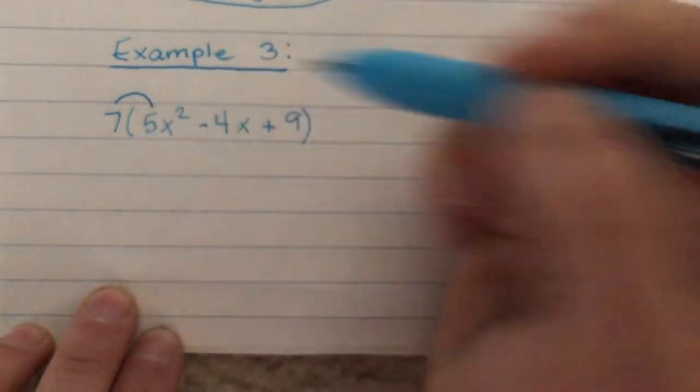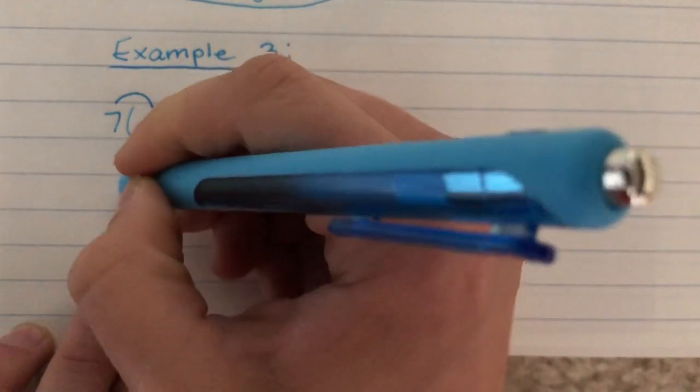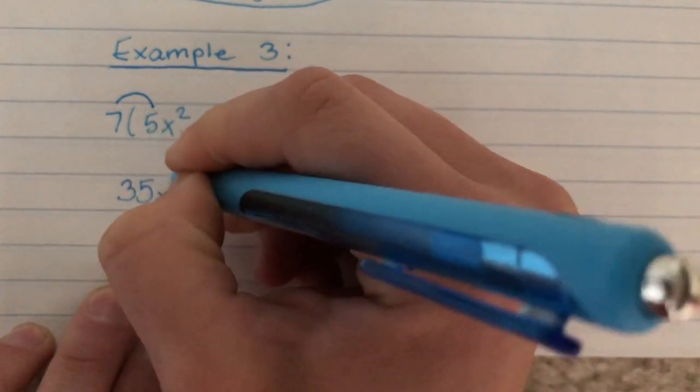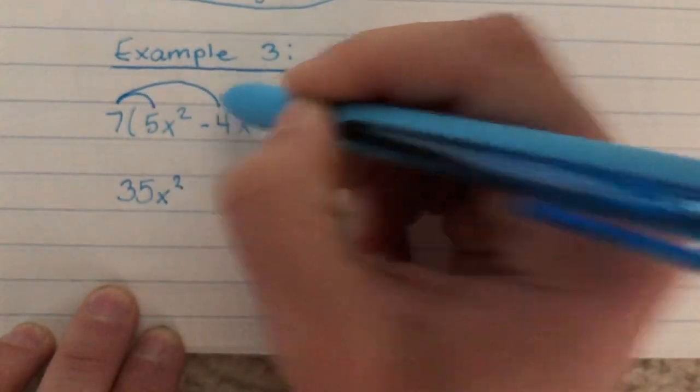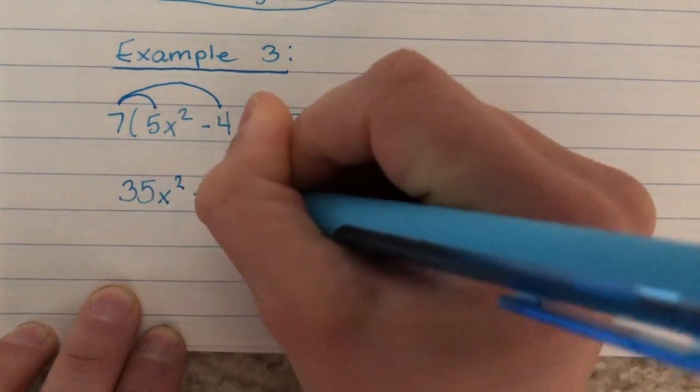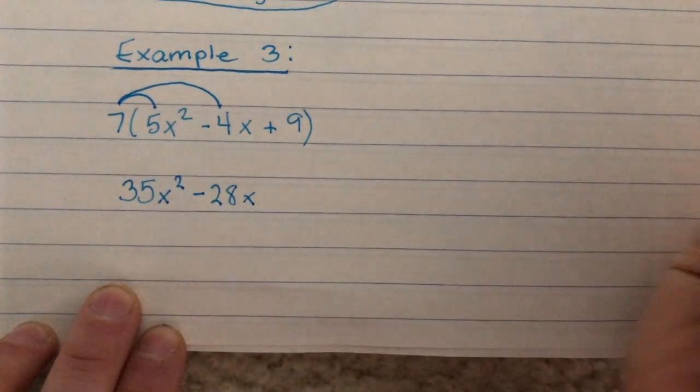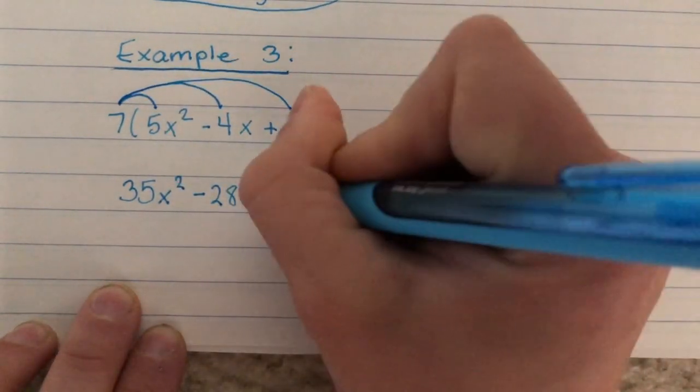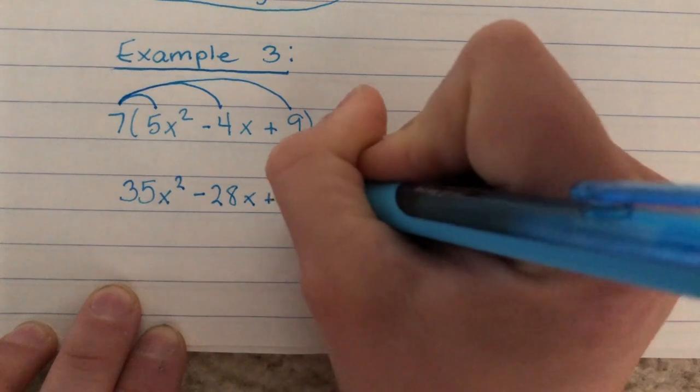We're going to start with 7 times 5, which is 35, and we're going to bring down our x squared. And we're going to take 7 times negative 4, which is negative 28, and we're going to bring down the x. And then we're going to take 7 times 9, which is a positive 63.